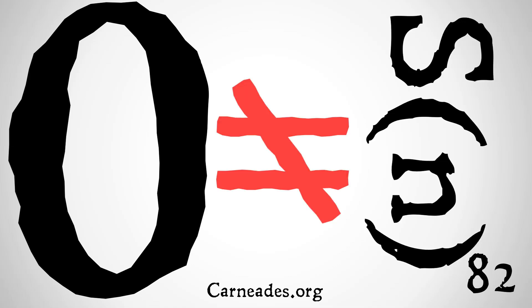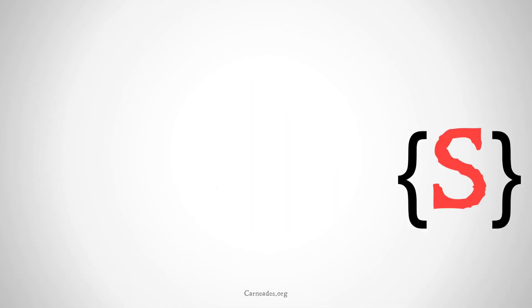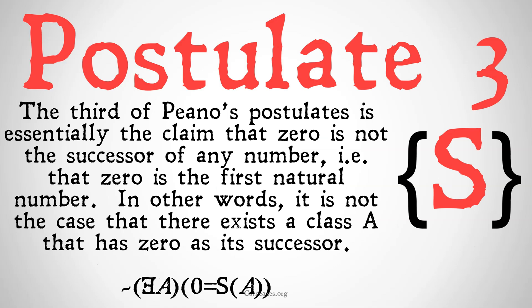In this video, we're going to be taking a look at the third Peano postulate: zero is not the successor of any number. The third of Peano's postulates is essentially the claim that zero is the first natural number — it is not the case that there exists a class A that has zero as its successor, i.e., zero is not identical to the successor of any A.